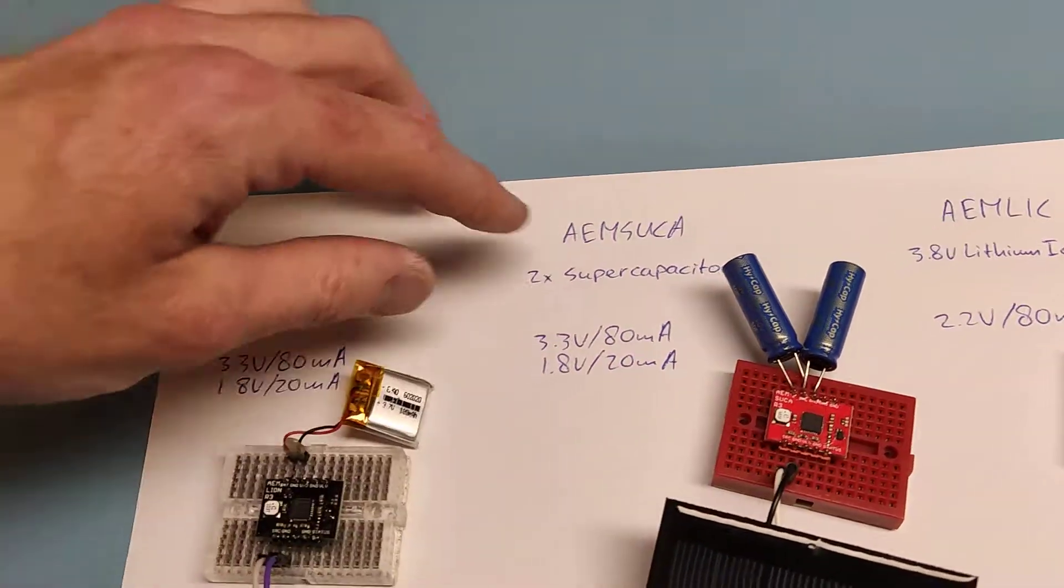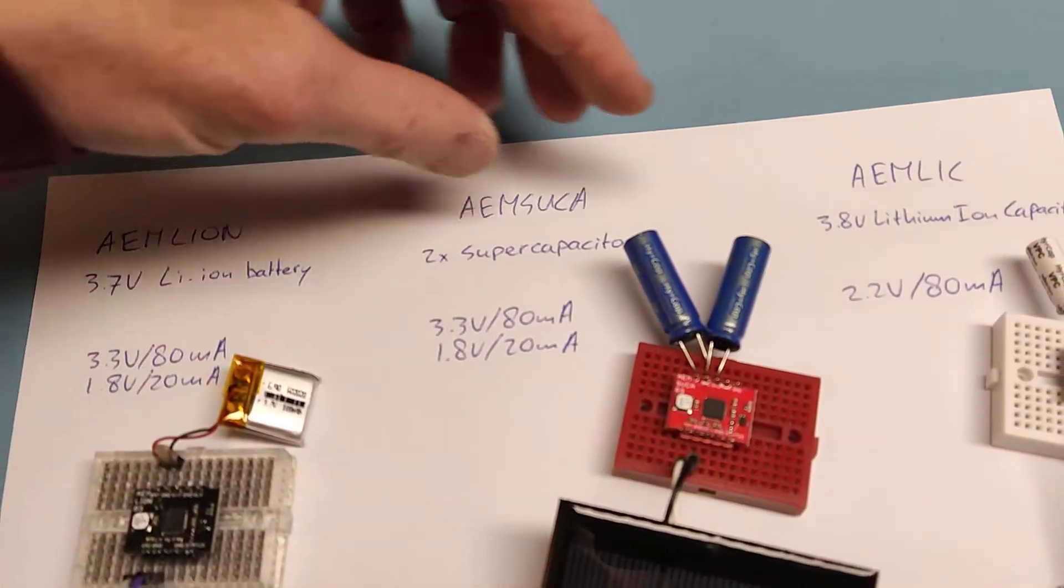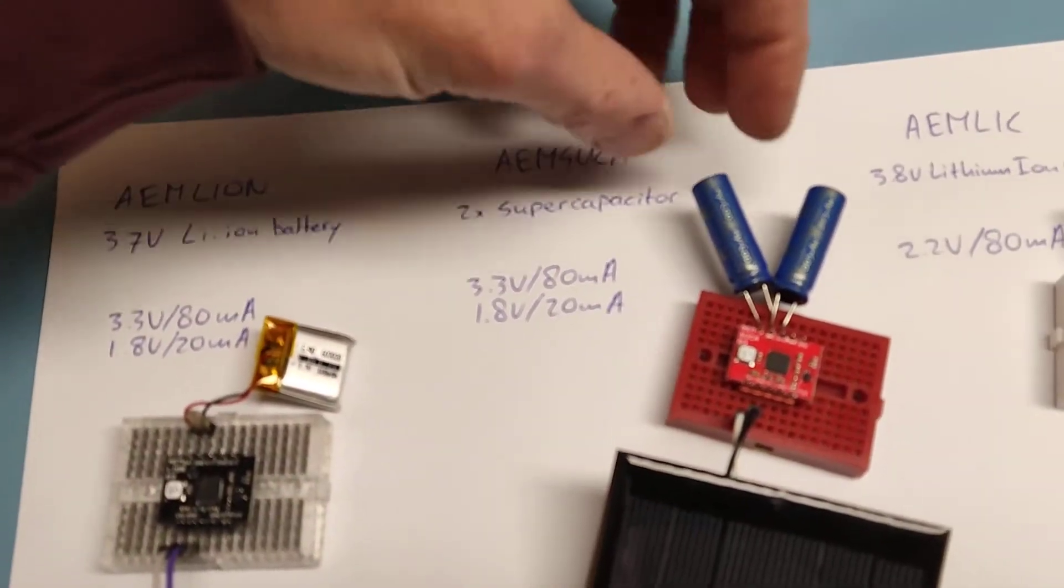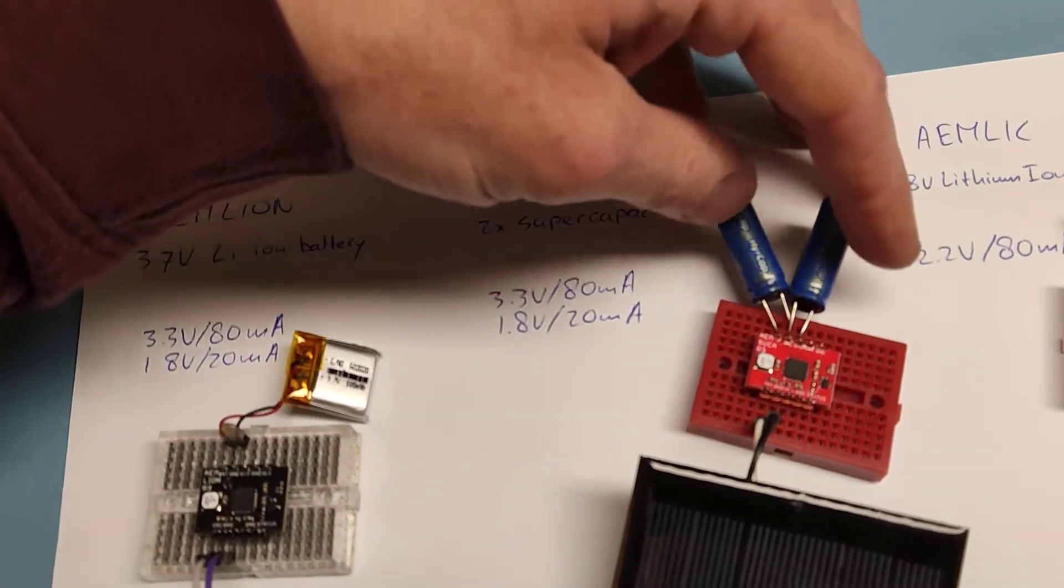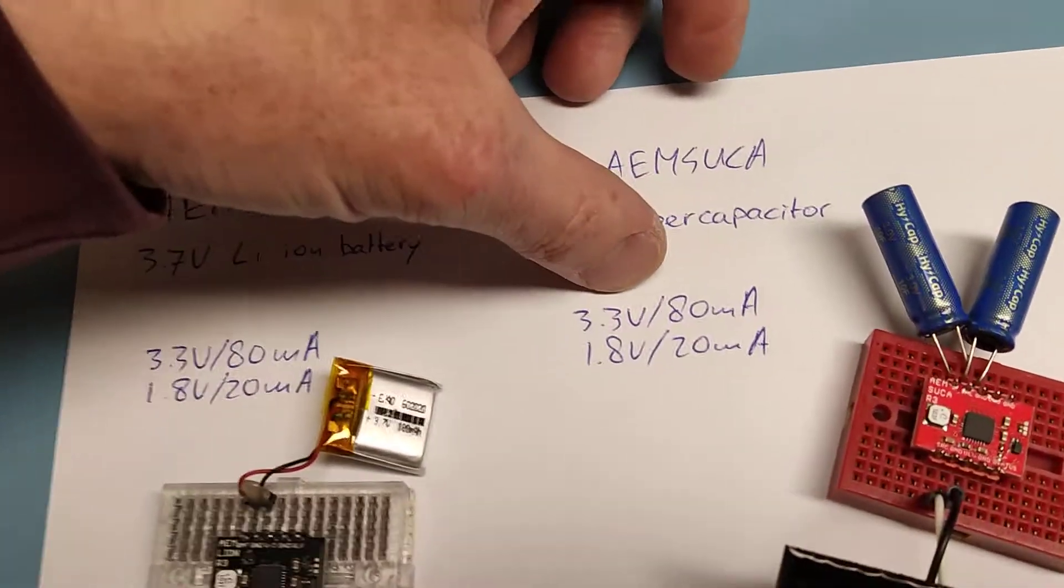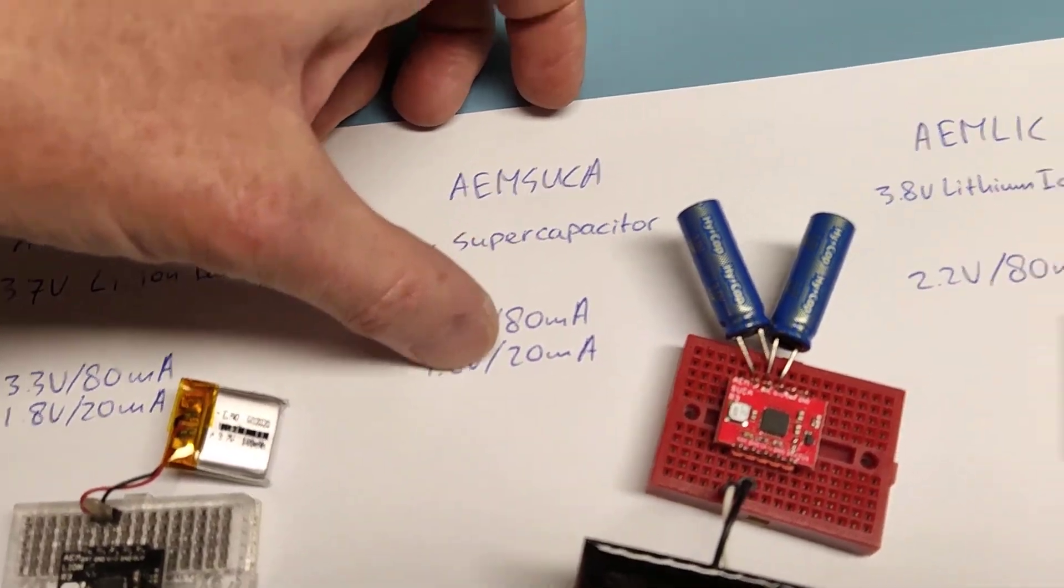If you want to create a green product, you should use capacitors. For example, this AEM Suka uses two supercapacitors in series. They need two because then you can get a high enough voltage: 3.3 volt.